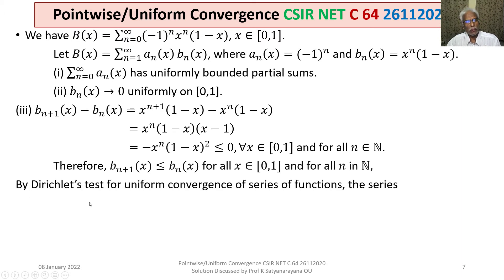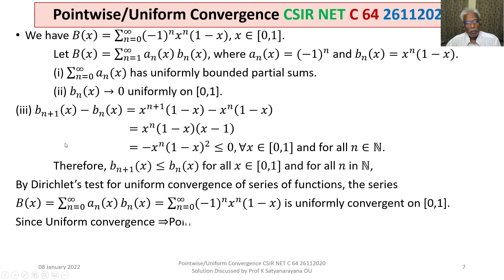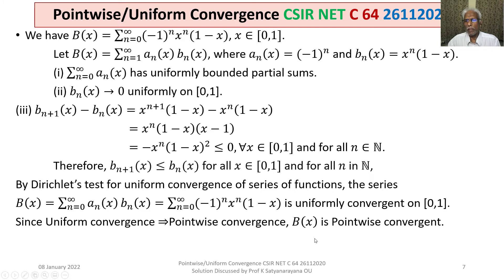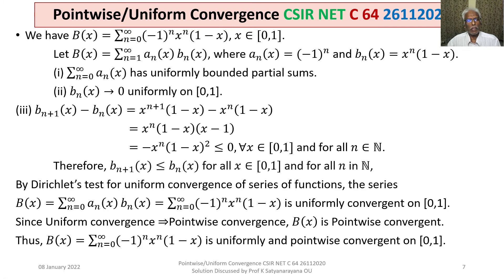All three conditions of the Dirichlet test are satisfied. Therefore, by the Dirichlet test for uniform convergence of series of functions, B(x) = sigma_{n=0}^{∞} (−1)^n x^n (1−x) is uniformly convergent on [0, 1]. Since uniform convergence implies pointwise convergence, B(x) is also pointwise convergent. Thus B(x) is both uniformly and pointwise convergent on [0, 1].